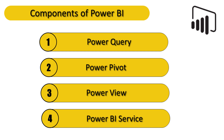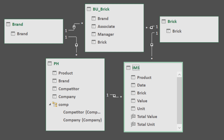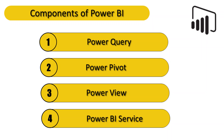First we need to clean the data — remove blank values, null values, and duplicate values. The next component of Power BI is Power Pivot, which helps us model the data. When data comes from multiple sources, it needs to be modeled properly. We need to find the relationships between different data sources so they can be connected and joined together to give a common report. This is the work of Power Pivot.